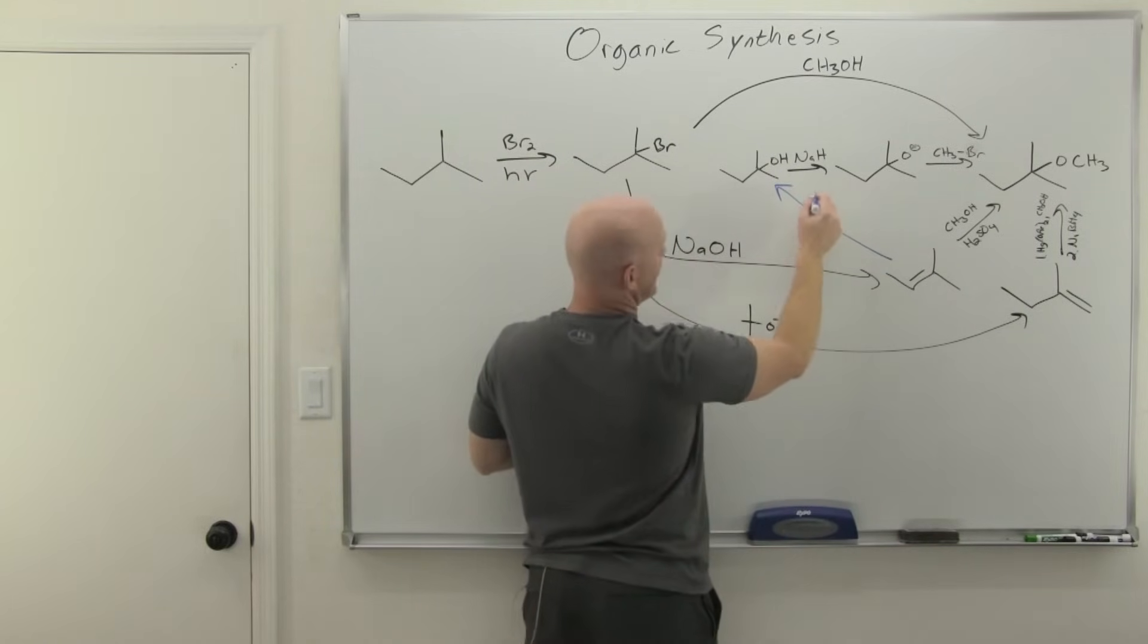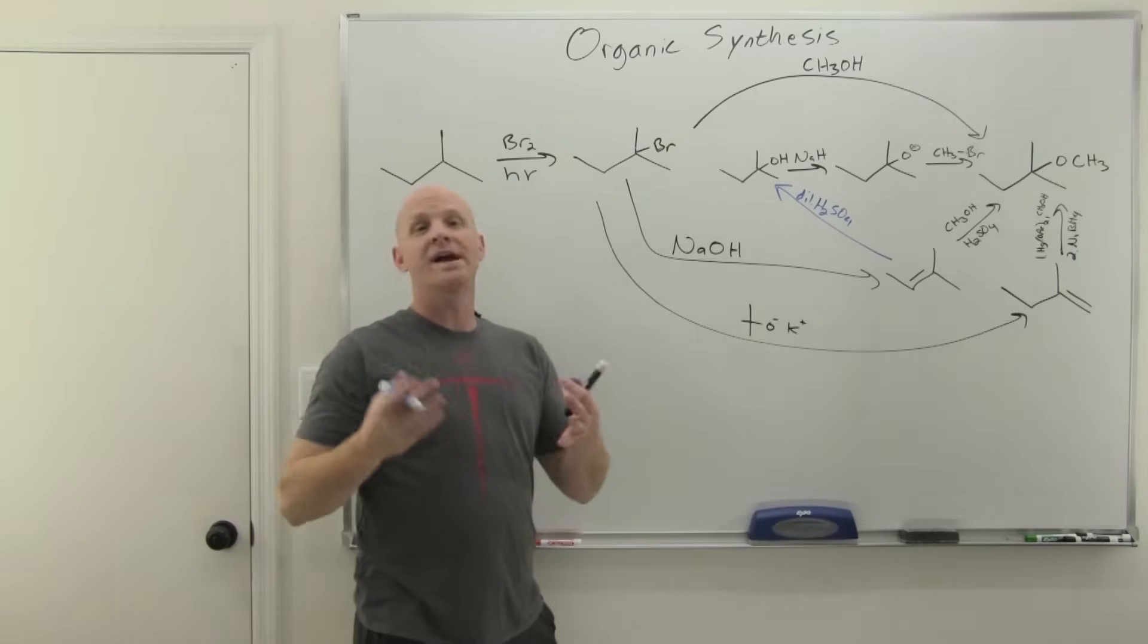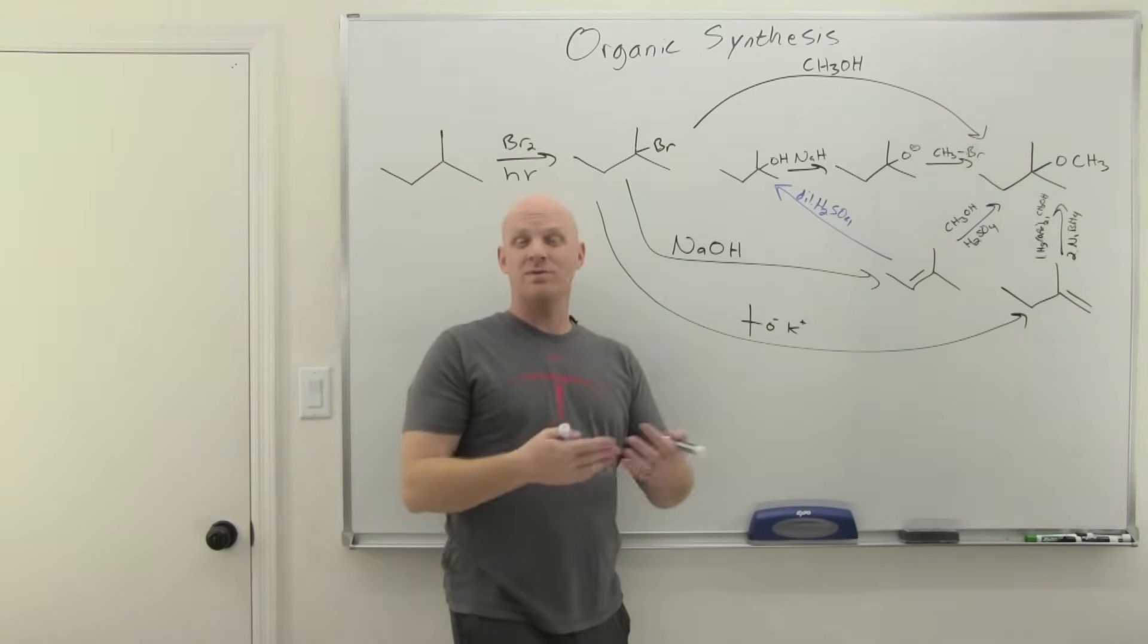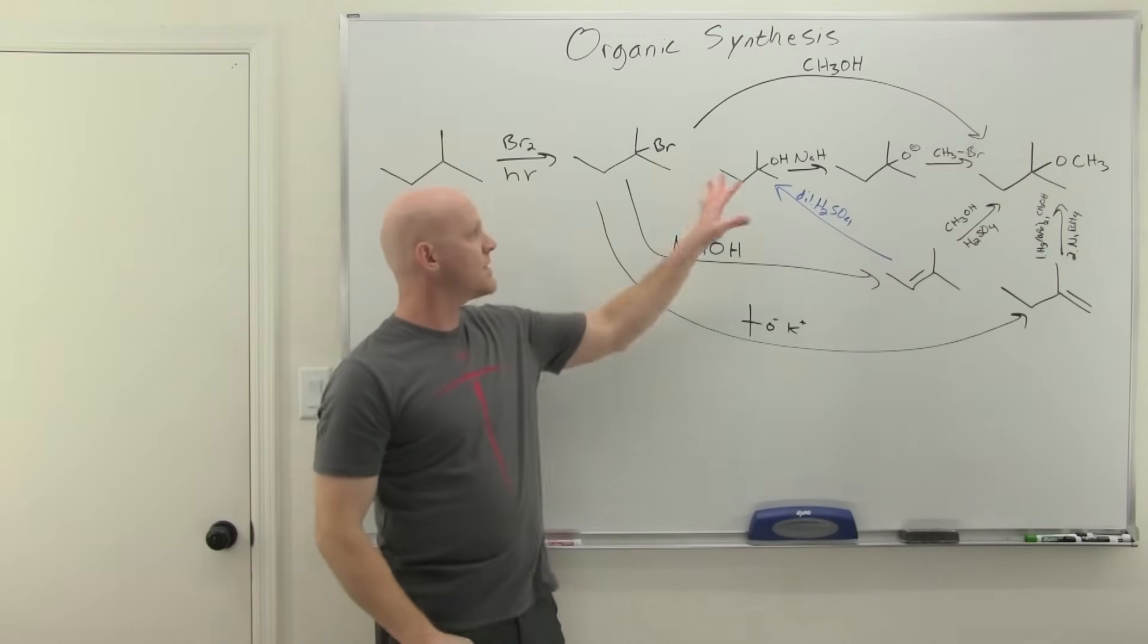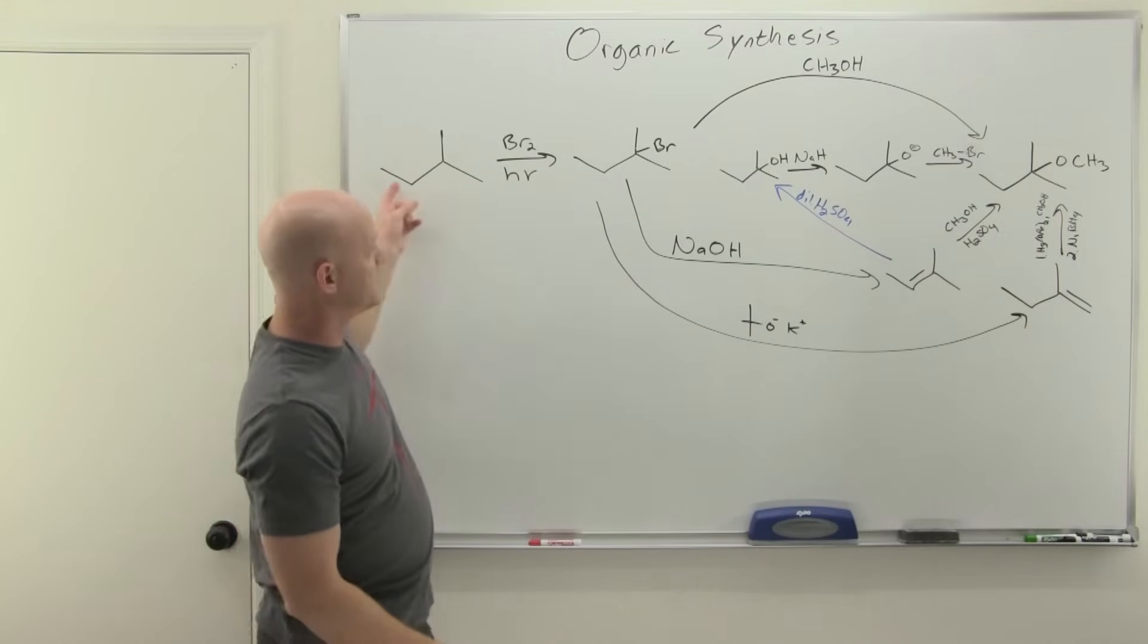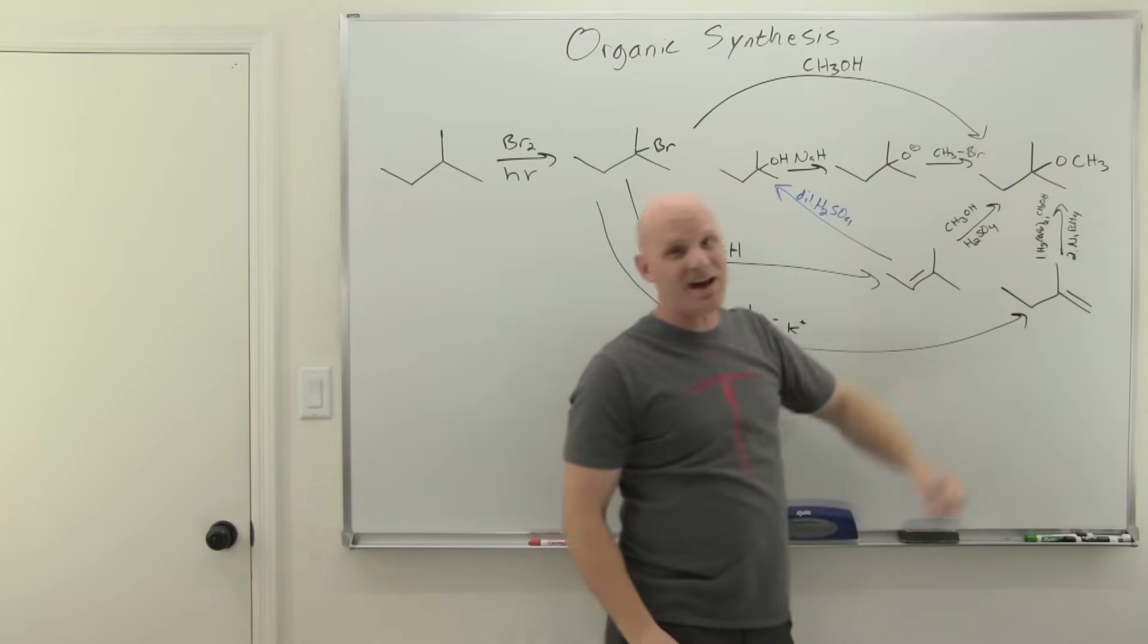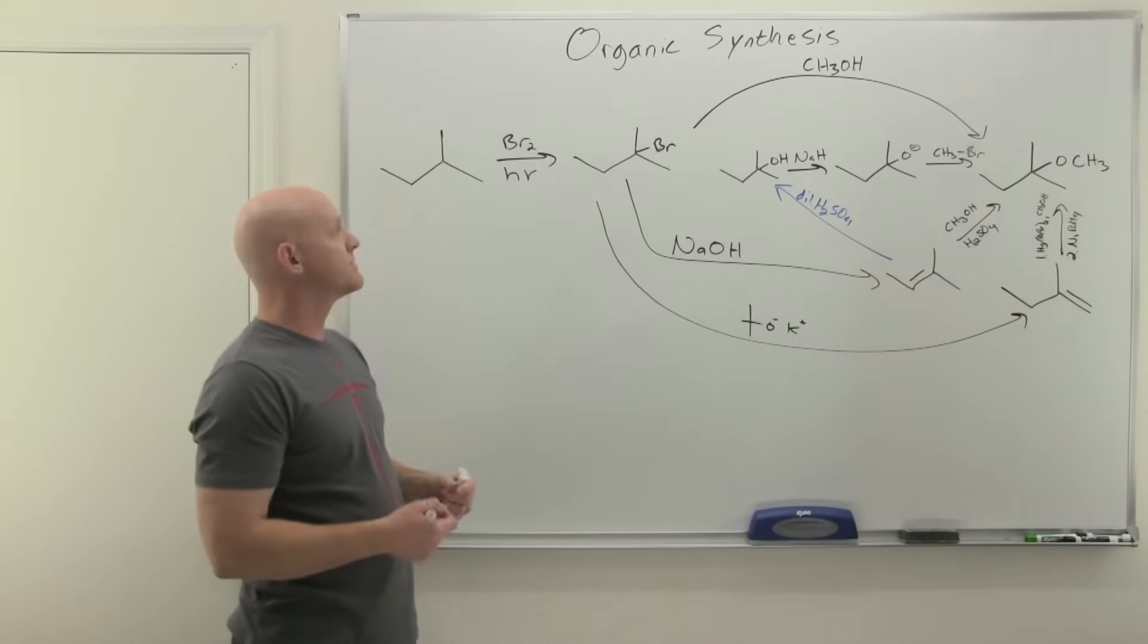You could do acid catalyzed hydration, like dilute H2SO4 or H2SO4 in water or H3O+. You could also do oxymercuration-demercuration. So, mercuric acetate with water followed by sodium borohydride. Either one of those go to Markovnikov and we're not going to worry about rearrangements. But notice, all of a sudden, now we're getting pretty long on our synthesis. It would be one step, two steps, three steps, four steps, five steps.